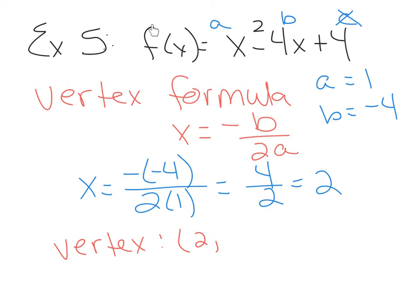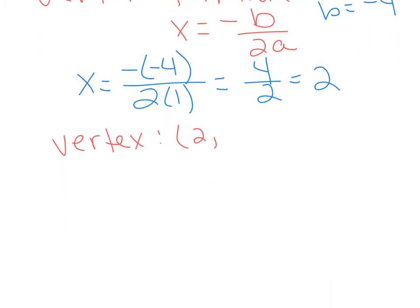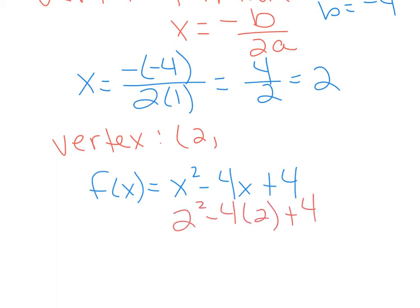To find the y-coordinate, remember that f(x) is standing for y. If I take my x-coordinate, plug it in, and evaluate the function, it will tell me what y is. The function was f(x) equals x squared minus 4x plus 4, and substituting 2: 2 squared minus 4 times 2 plus 4 equals 4 minus 8 plus 4, which equals 0. So the y-coordinate is 0, and the vertex is at (2, 0).